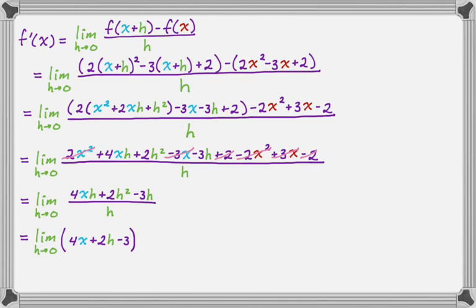At this point, if I let h equal 0, there's no problems. Every step before this would have given 0/0, which means do more work. But now, letting h equal 0: 4x + 2(0) - 3, which is 4x - 3. So f'(x) = 4x - 3.